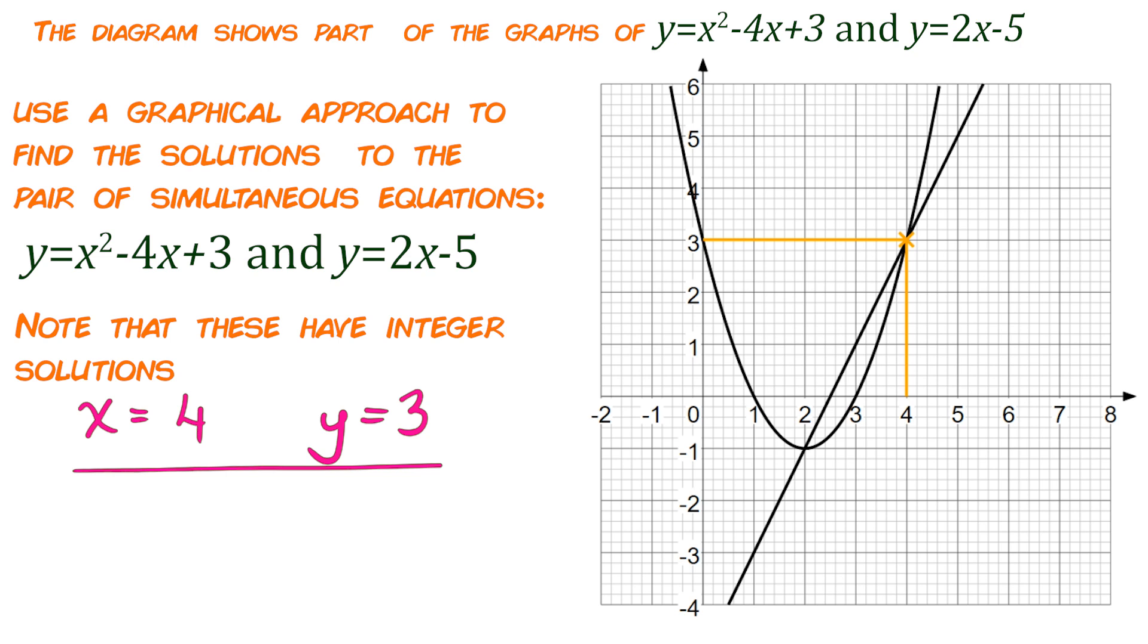So we've got 4 and 3 and then the second point they're crossing over here so that second pair of coordinates is going to be 2 and minus 1.